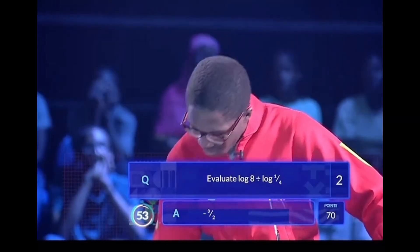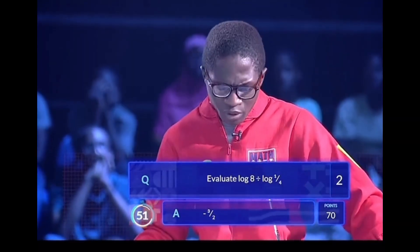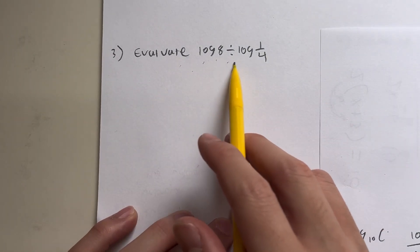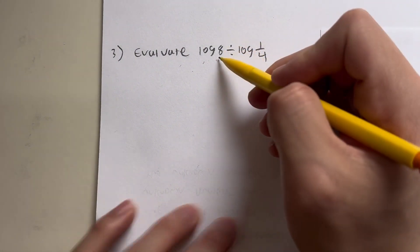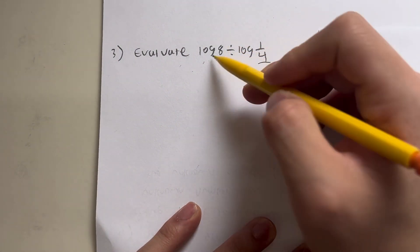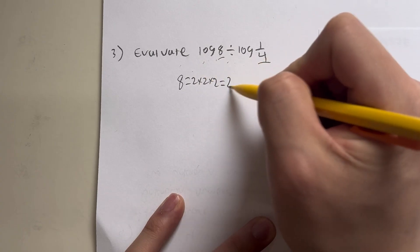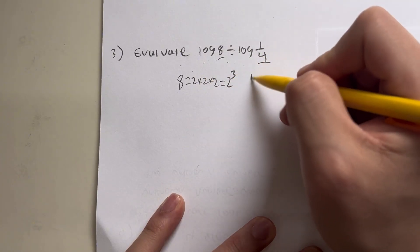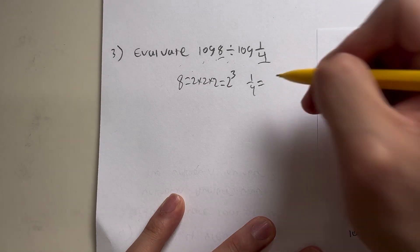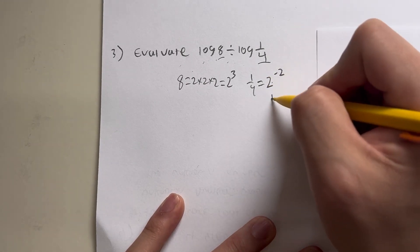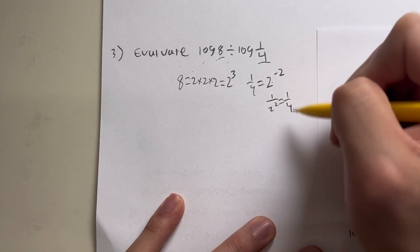Now, moving on. Evaluate log 8 divided by log 1 over 4. That's super impressive, because this question is not an easy one. So the question is asking us to evaluate log of 8 divided by log of 1 fourth. Now, to do this, I'm going to rewrite 8 and 1 fourth. I know that 8 is equal to 2 times 2 times 2, which is the same as 2 to the third power. How about 1 fourth? 1 fourth is a little harder to spot, but this is actually equal to 2 to the negative 2, because this is just equal to 1 over 2 to the 2, which is equal to 1 over 4.